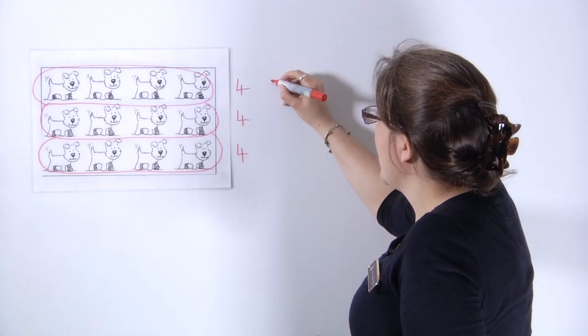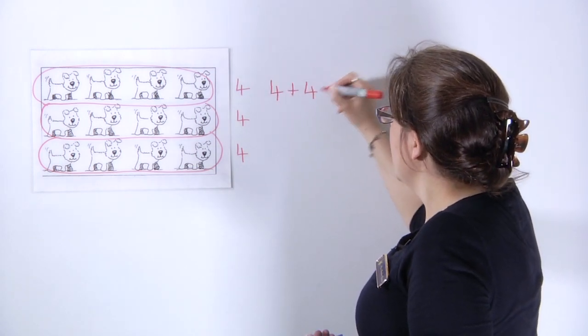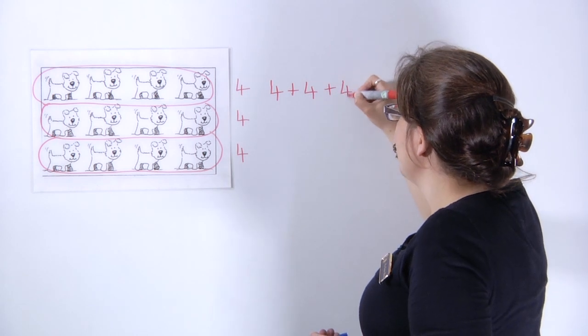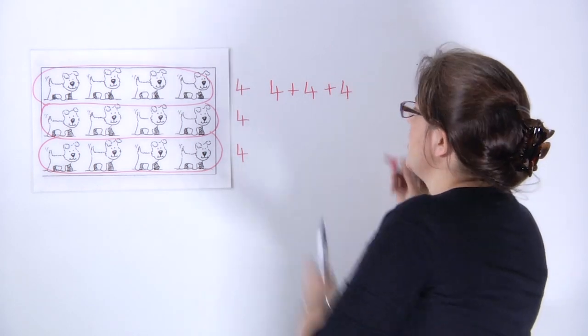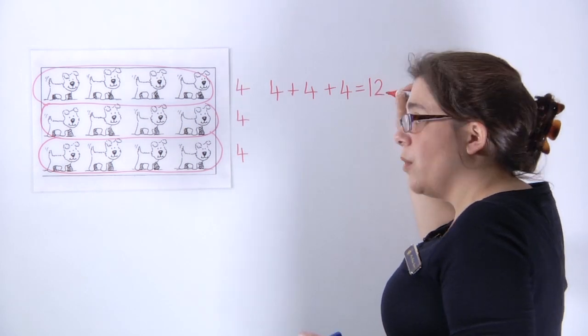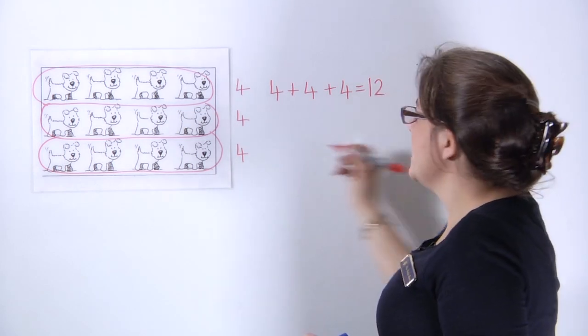And we start to think about how we can represent that. That will be the same as four, add four, add four. We've added four each time for each of the groups. And because we've added the same number on each time, it's known as repeated addition.